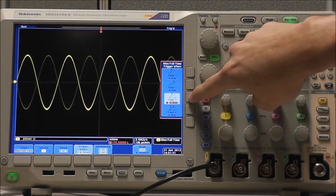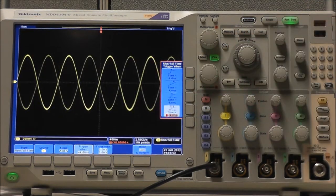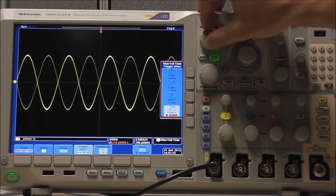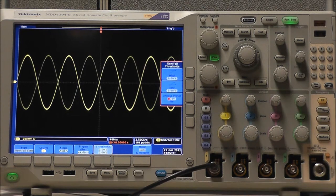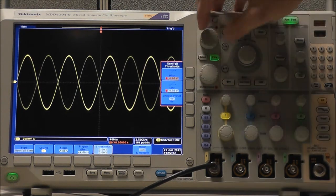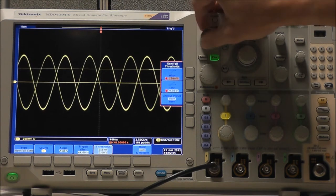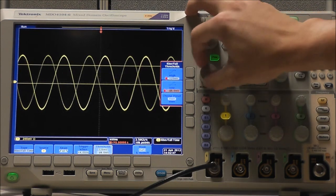We can trigger when Rise and Fall Time is less than, greater than, equal to, or not equal to a specified time using Multipurpose A to adjust our specified time. Selecting Thresholds, we can use Multipurpose A to adjust our High Threshold, and Multipurpose B to adjust our Low Threshold.